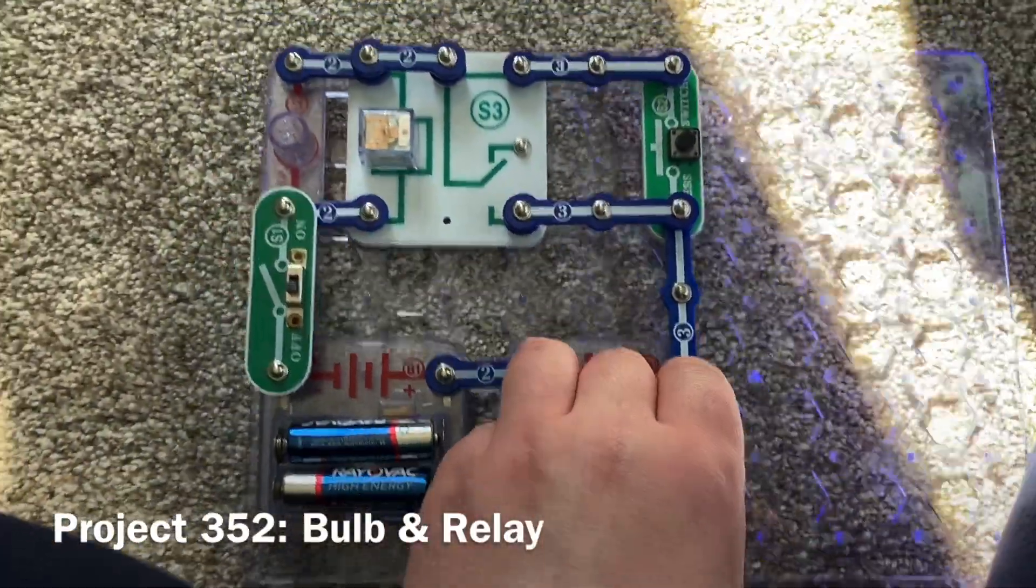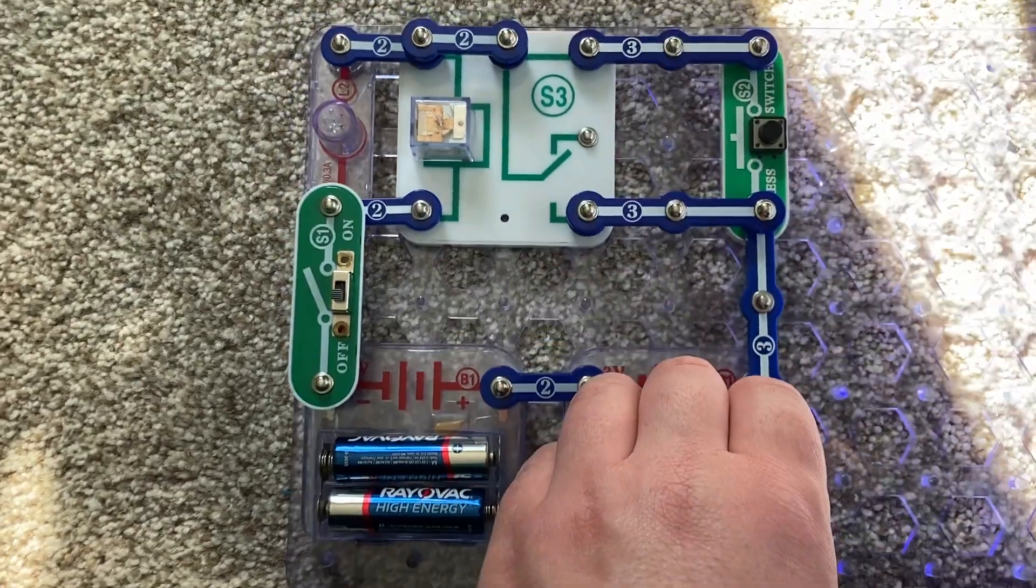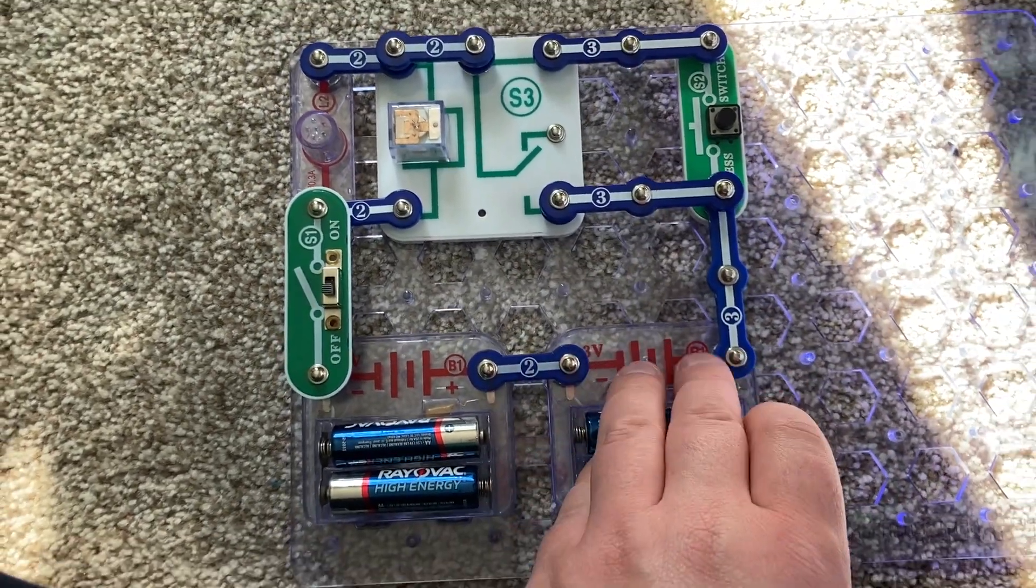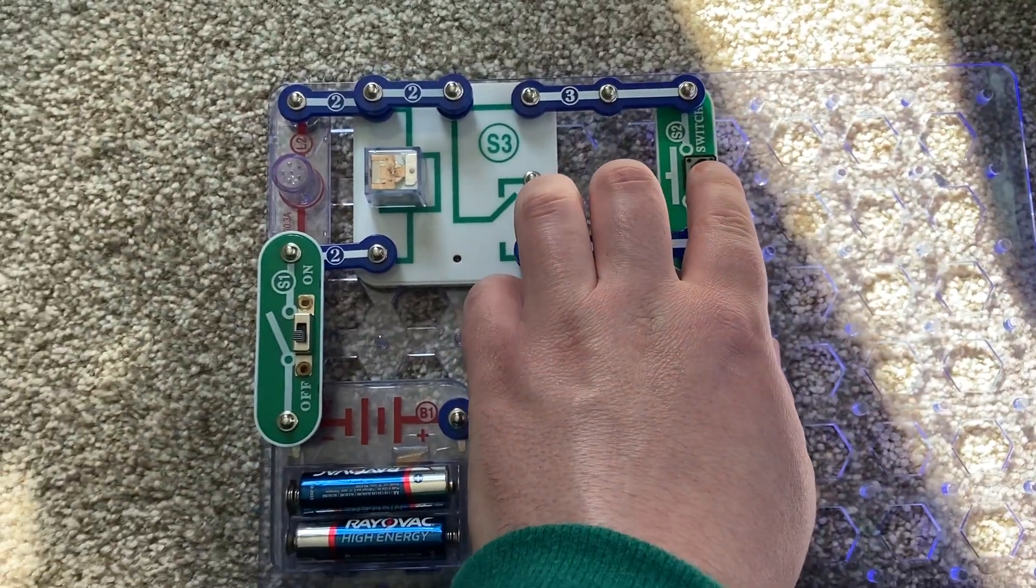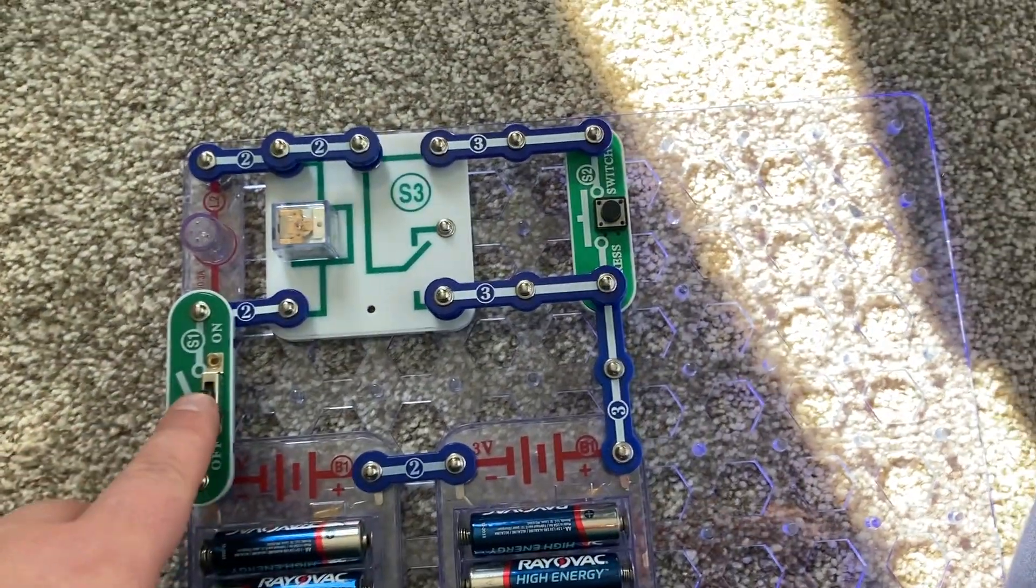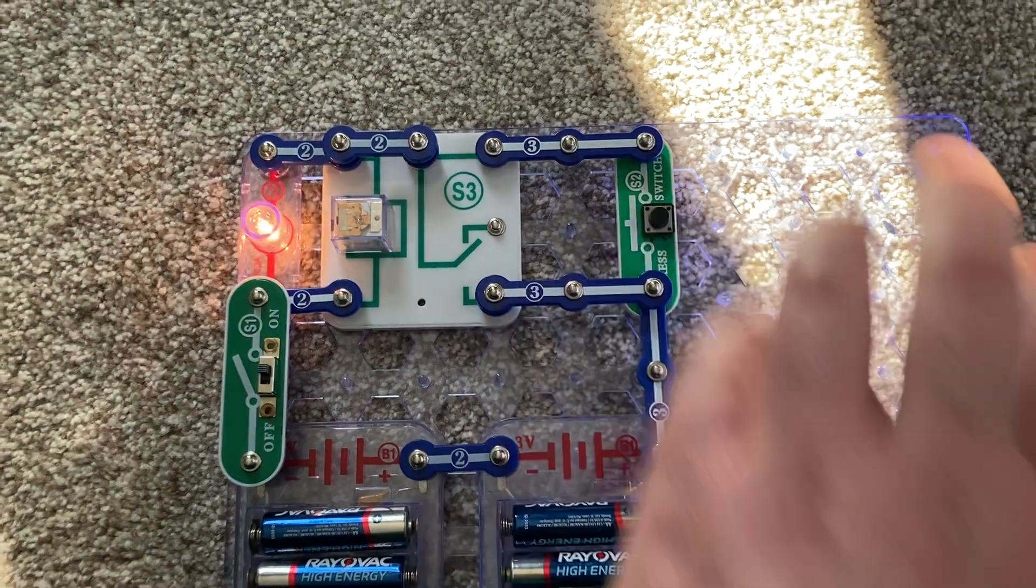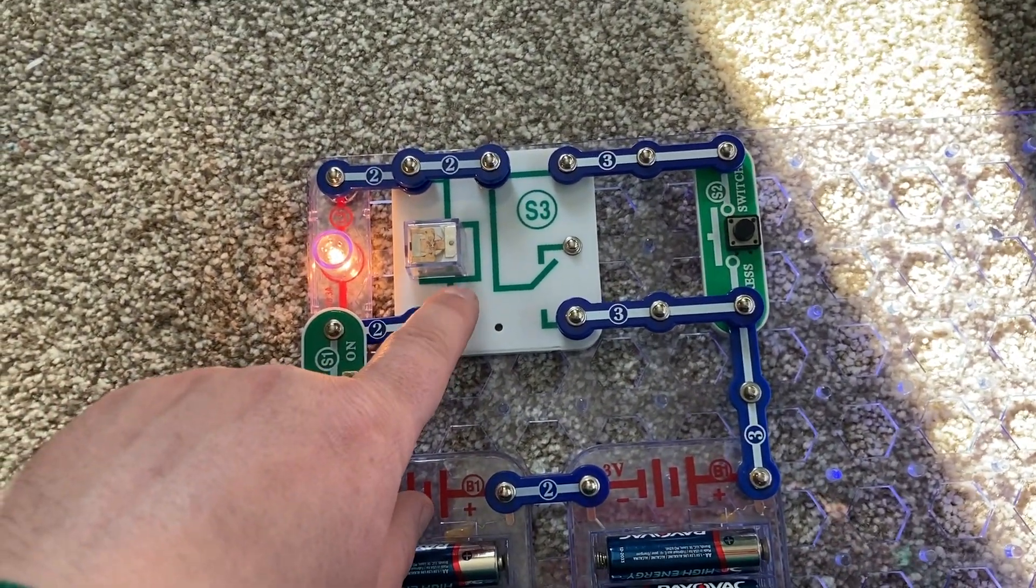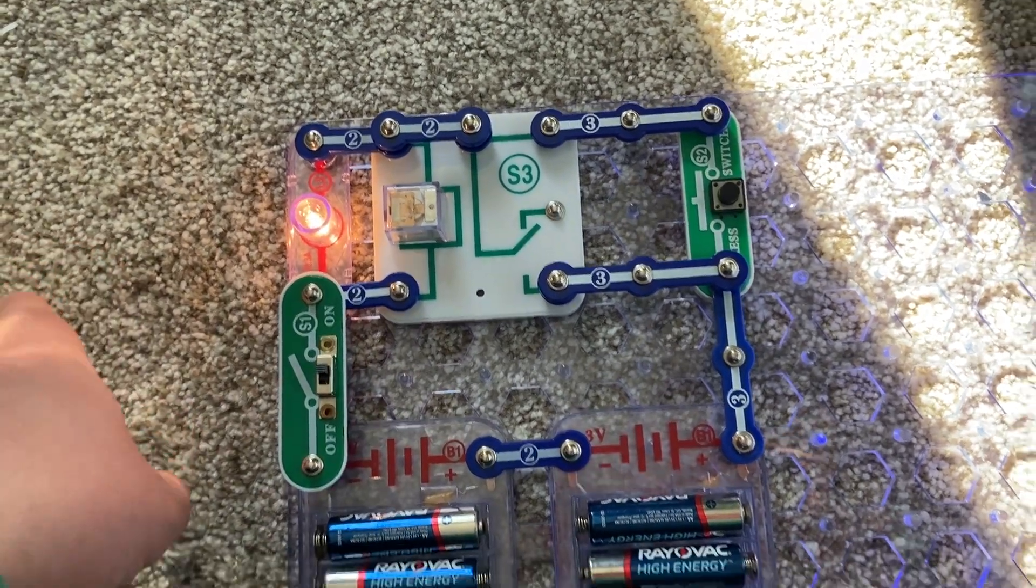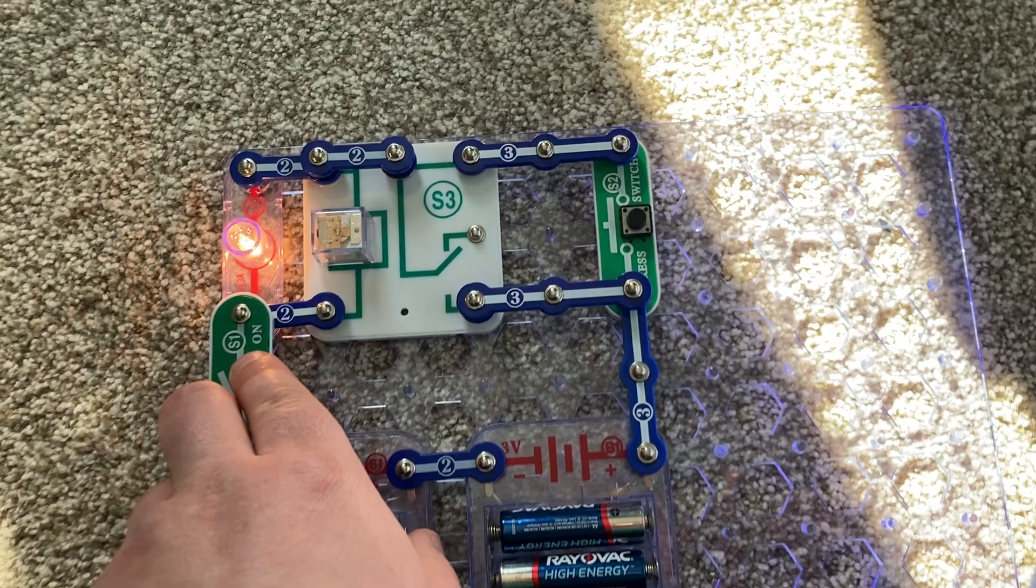This circuit gives an idea of how computers use memory circuits to remember states such as on and off. When I push the press switch and the slide switch is off, the bulb stays off. But when I turn on the slide switch, then push and release the press switch, the lamp comes on, and the S3 relay will remember that it is on. And it will stay on until I turn off the slide switch.